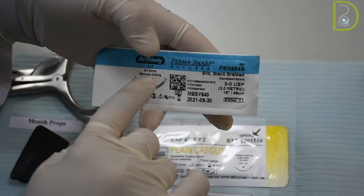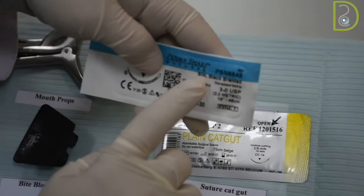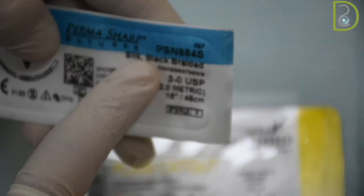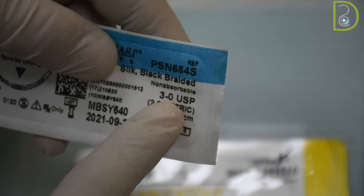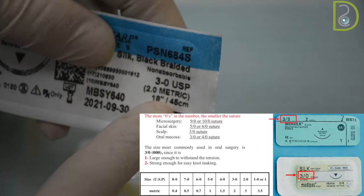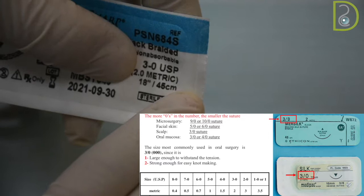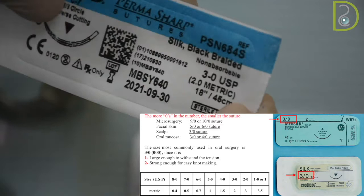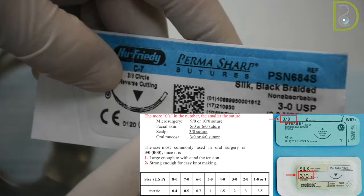Coming now to the suture material. This one is a silk and it is a non-resorbable kind. So because it's a silk, it's a natural resource. And over here you have the size of the suture. It's a 3-0s. And the length of the suture is 45 centimeters. So there are some information related to the suture itself, information related to the needle. So this kind is the non-resorbable silk, which is coming from a natural resource.